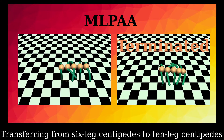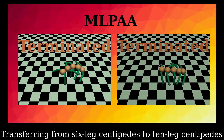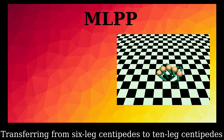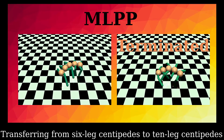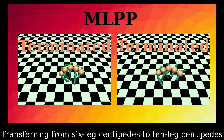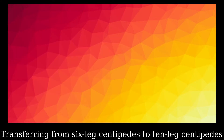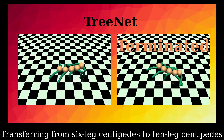We do experiments on many transfer learning benchmarks, the results of which are left in the appendix. Here are the results of transferring from six-leg centipedes to ten-leg centipedes. Similarly, NerveNet is able to produce good initialization of the model.